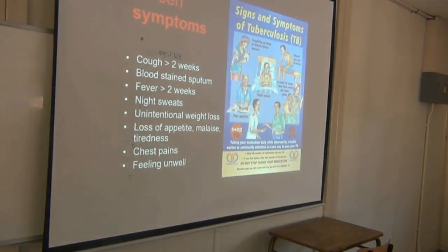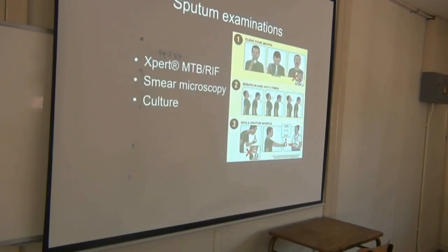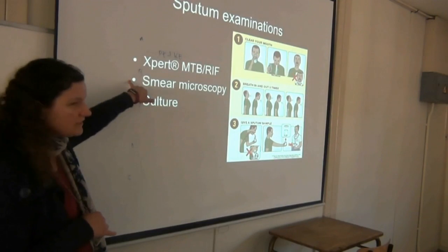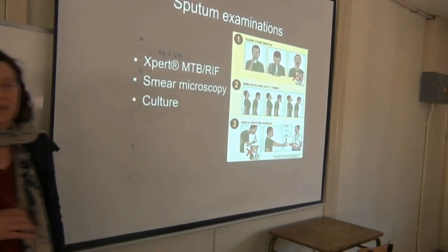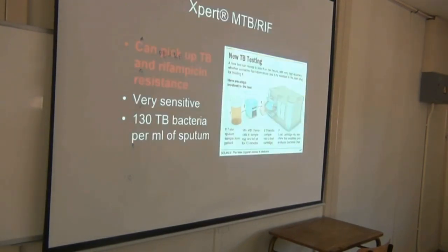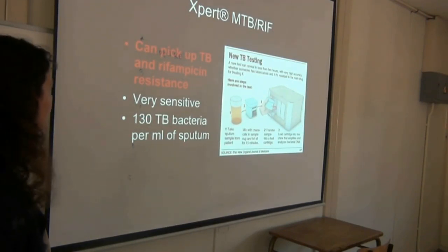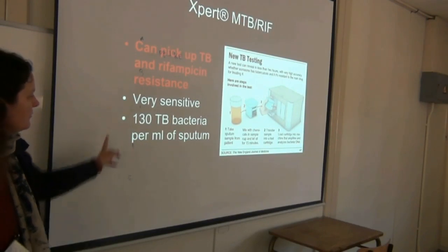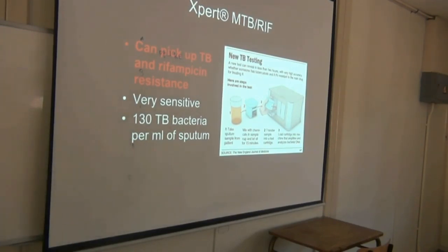For diagnosis, we diagnose TB with GeneXpert. We monitor treatment with smear microscopy. If there is smear-negative TB, we wait for a culture. GeneXpert can pick up TB and rifampicin resistance — it's a two-in-one and is very sensitive, needing about 130 TB bacteria in the sample to give a positive test.